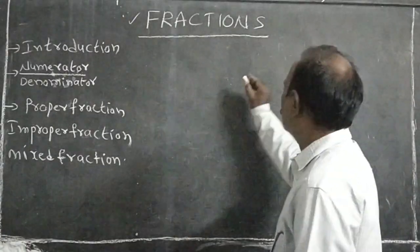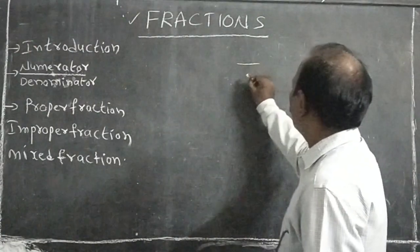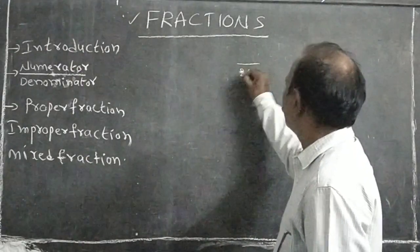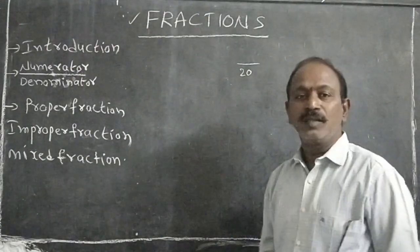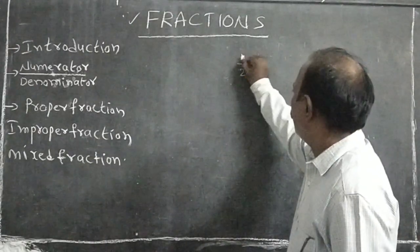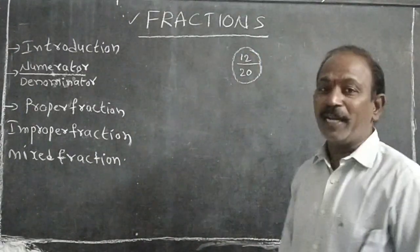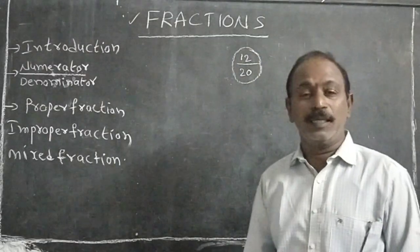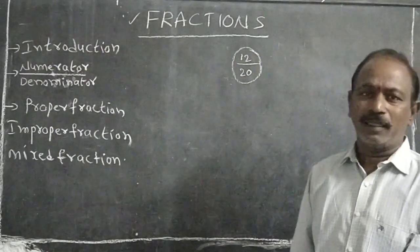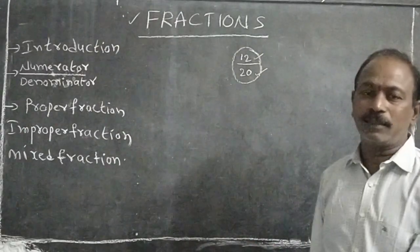Suppose the total number of students in our class is 20. Today, the number of students who attended is 12. This fraction represents the attendance of the class — attended students by total students.